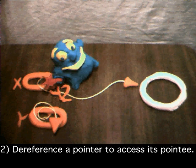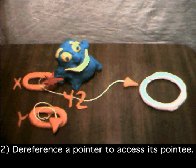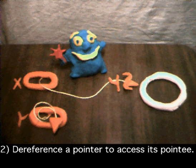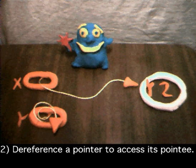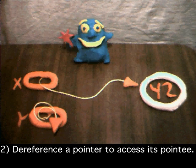Number two, pointer dereferencing starts at the pointer and follows its arrow over to access its pointee. As we all know, this only works if there is a pointee, which kinda gets back to rule number one.